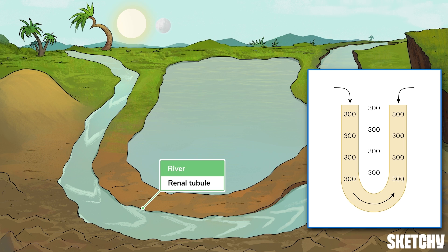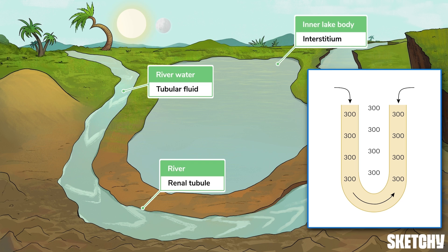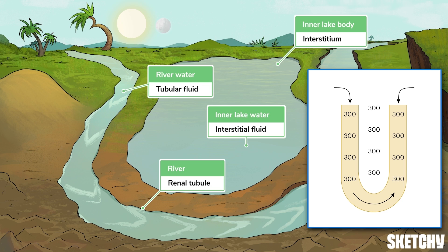Let this river here represent a segment of the renal tubule — we'll identify which specific segment in a moment. Just appreciate that this river has a constant flow of water, representing the fluid inside the tubule. The tissue surrounding the renal tubule is referred to as the interstitial space, or interstitium, symbolized by this lake sitting in the space between the two segments of river. In various parts of the renal tubule, water and solutes flow into the interstitial space to be reabsorbed back into the blood. Let the water inside the lake represent the interstitial fluid.